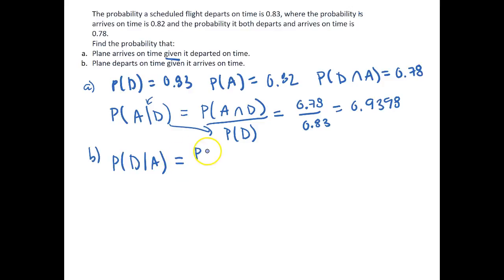This is again by definition the intersection of A and D on top, so our numerator is the same, but true to form as a conditional this will always change our sample space. So now the probability of A has to go into the denominator because it has occurred.